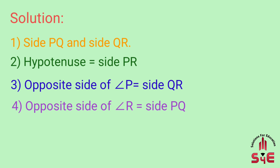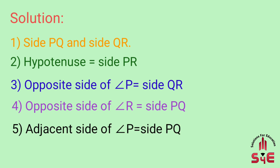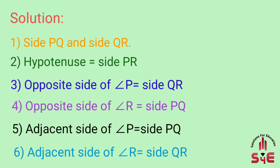Fourth: opposite side of angle R is side PQ. Fifth: adjacent side of angle P is side PQ. Sixth: adjacent side of angle R is side QR. Assignment ke solutions is tarah honge: side PQ aur side QR perpendicular sides hain; hypotenuse side PR hai; angle P ka opposite side QR hai; angle R ka opposite side PQ hai; angle P ki adjacent side PQ hai; aur angle R ki adjacent side QR hai.